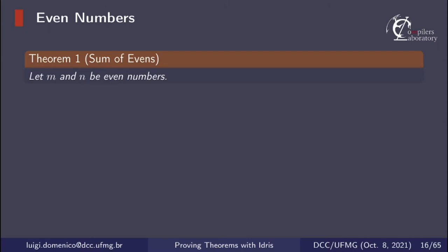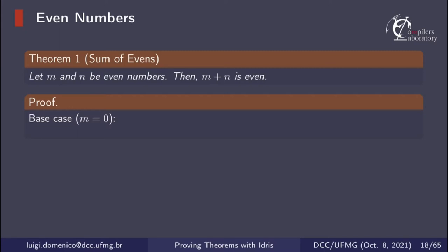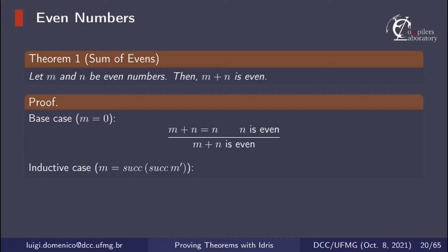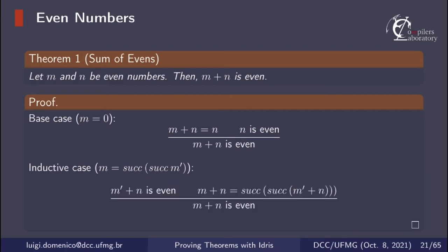The first theorem we're going to prove is that if m and n are even numbers then m plus n is even as well. The proof is quite simple — we apply induction on m. If m is 0 then m plus n is n, and n is even by hypothesis, so m plus n is even. The inductive case is when m is the successor of the successor of m prime. We apply induction on m prime plus n to show that m prime plus n is even, and we know that m plus n is the same as the successor of the successor of m prime plus n, which is basically the inductive definition of even numbers, so we can conclude that m plus n is even.